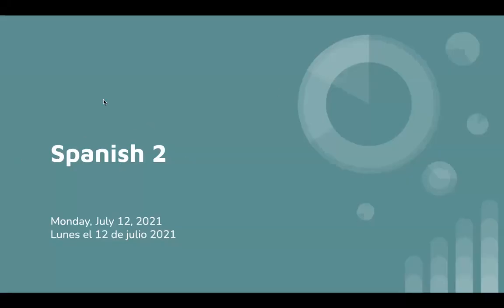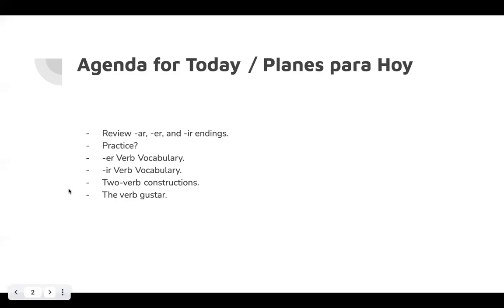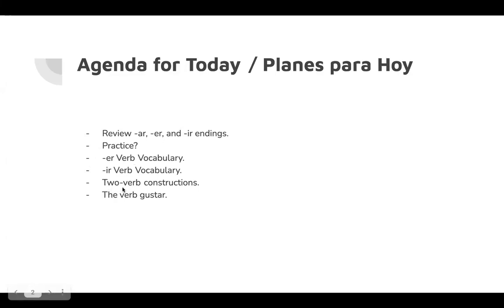I'm going to record this so I can put it on the YouTube channel. I just put this PowerPoint on Google Classroom. So I figured we would review the AR, ER, and IR verb endings. If you think we need more practice, I can definitely find some. We'll go over the ER and IR verb vocabulary, and then we'll go over the two-verb constructions that were in the book — I think that's kind of important.